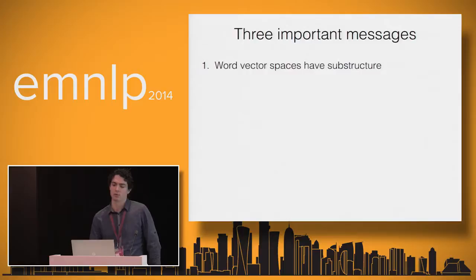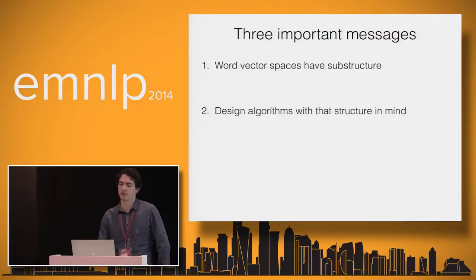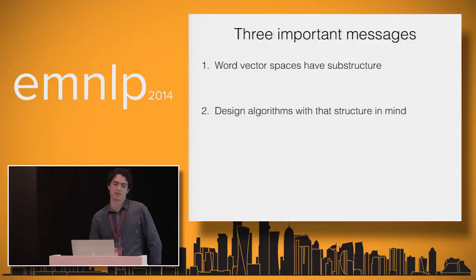The first insight is that word vector spaces have substructure, and this substructure is typically much more intricate than the basic clustering of similar or related words that by now we're quite familiar with. Second, I believe it's very important to design algorithms with that structure in mind. This applies both to the design of word vector learning algorithms, as I'll be describing today, but also and probably more importantly to algorithms that utilize word vectors in downstream tasks.